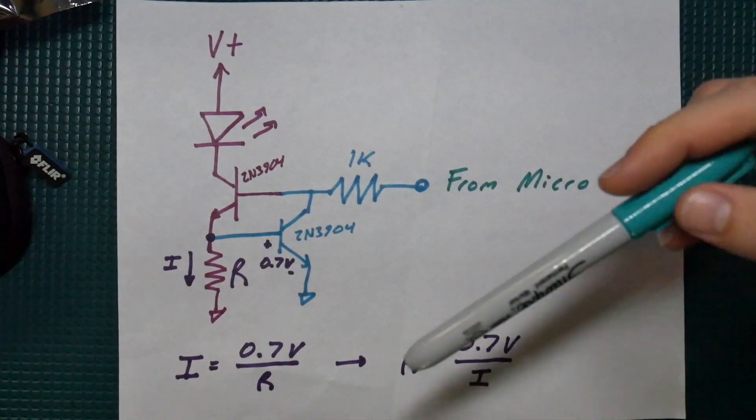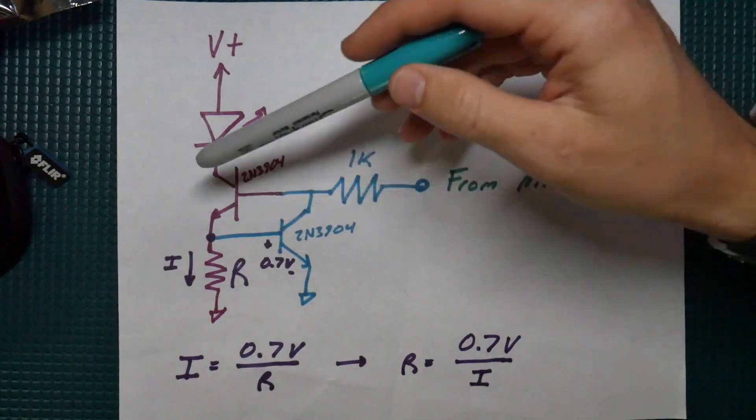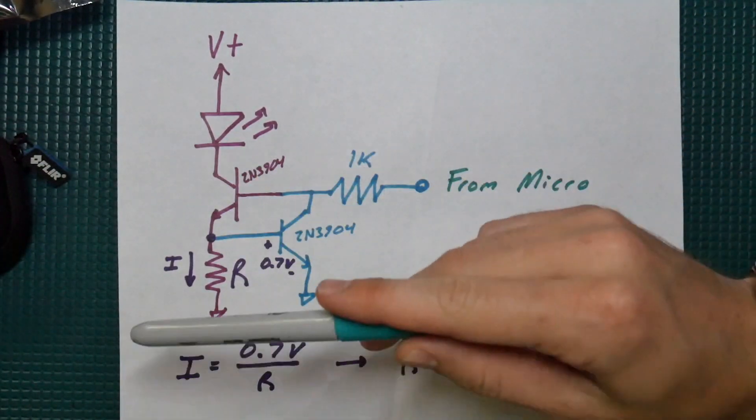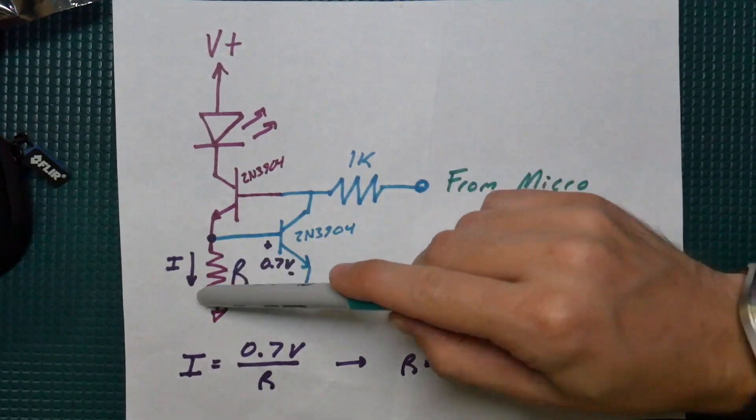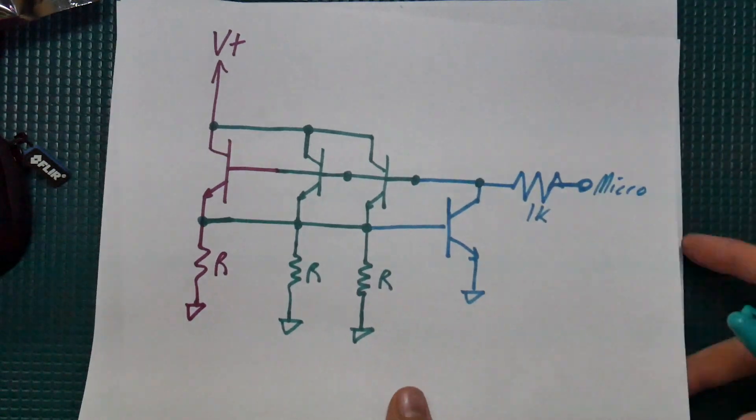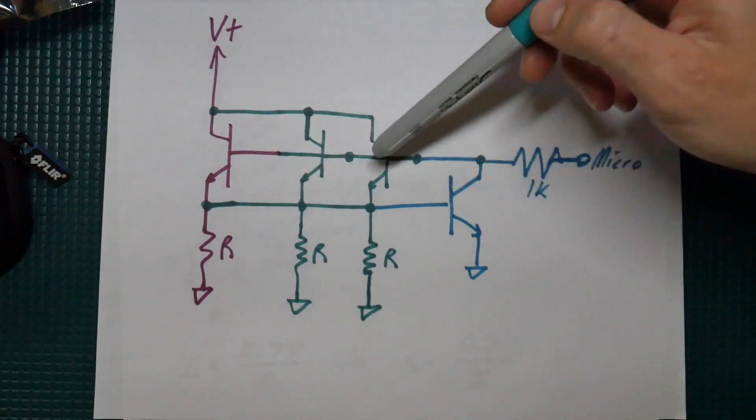So the problem with this circuit though is if you're driving a lot of current, you're dumping all of that power into the red transistor and also the R down here, your resistor.